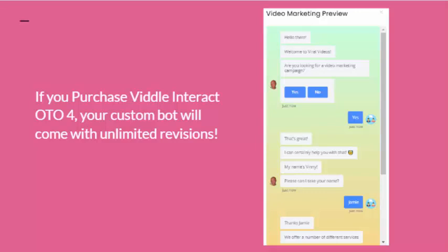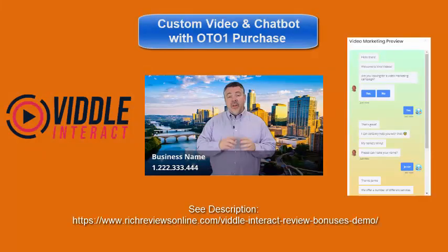Go ahead and click on the link in the description and it'll take you to my review page. There will be images there that you can click, or click here now, and it will take you directly to the Vittle Interact sales page to purchase. After you purchase, if you go to JVZoo, when you go to get your product, below the product information and download information is the bonus information — a blue button to access my bonuses. I look forward to working with you. Good luck with Vittle Interact and we'll see you on the other side.